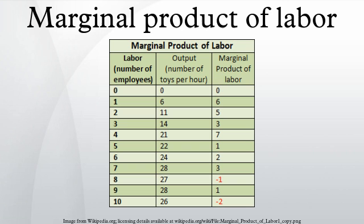Marginal Costs: The marginal product of labor is directly related to costs of production. Costs are divided between fixed and variable costs. Fixed costs are costs that relate to the fixed input, capital, or RK, where R is the rate of return and K is the quantity of capital. Variable costs are the costs of the variable input, labor, or WL, where W is the wage rate and L is the amount of labor employed. Thus, VC equals WL.